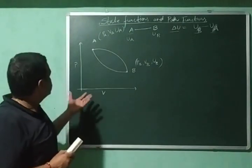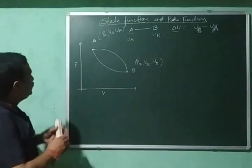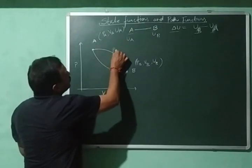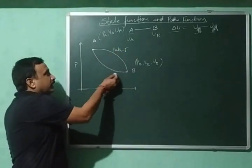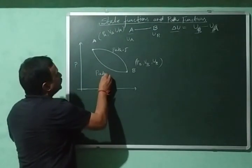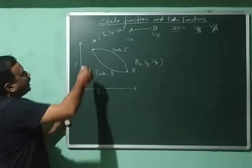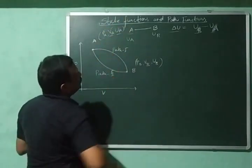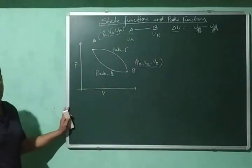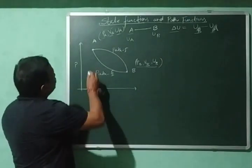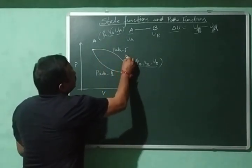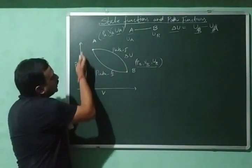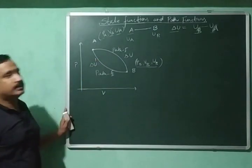To explain this, let us take the example of a PV diagram in which I have a cyclic process. A is being converted into B by following path 1, and B is coming back to A by following path 2. At point A, PA, VA, and UA are the pressure, volume, and internal energy, and at B, these are the corresponding values. When I move from A to B, the change in internal energy is delta U, and when I come back from B to A, the change in internal energy is delta U prime.